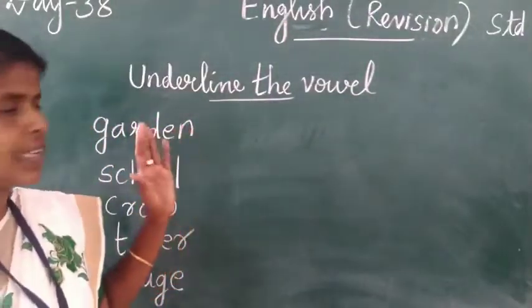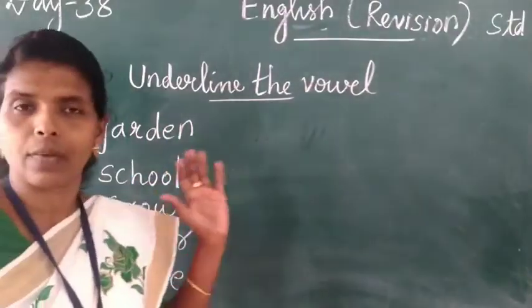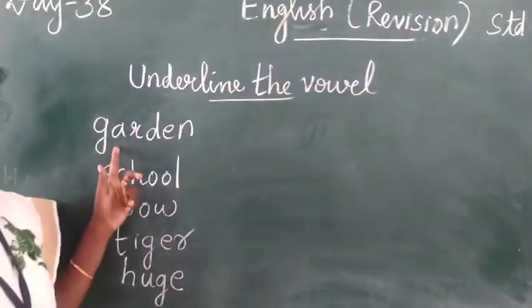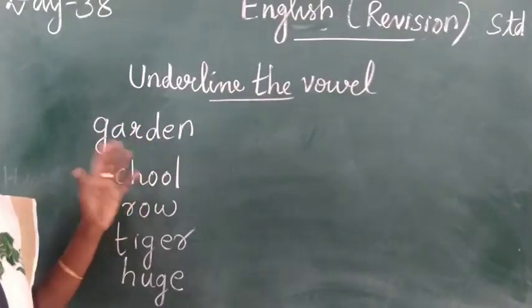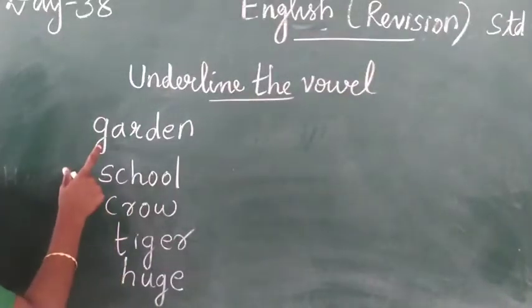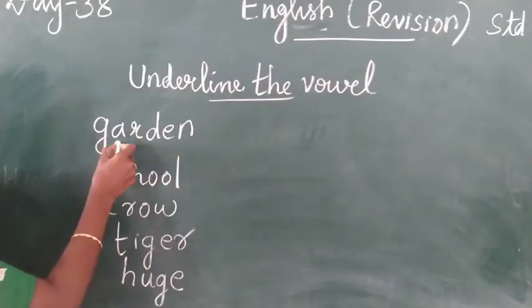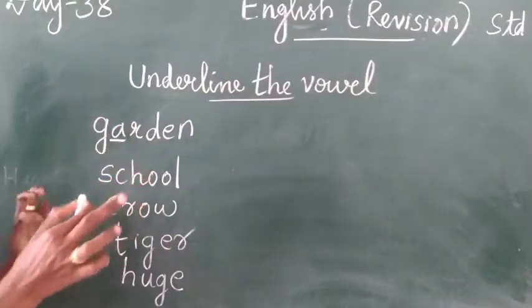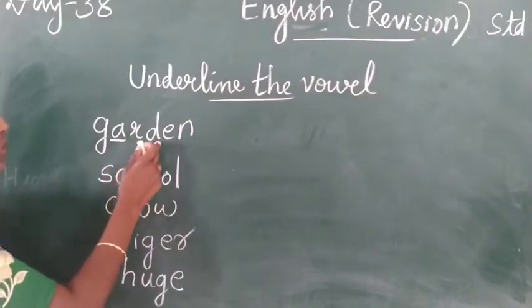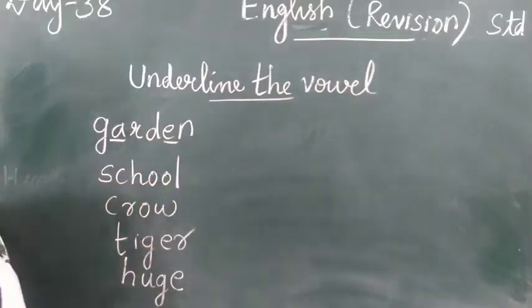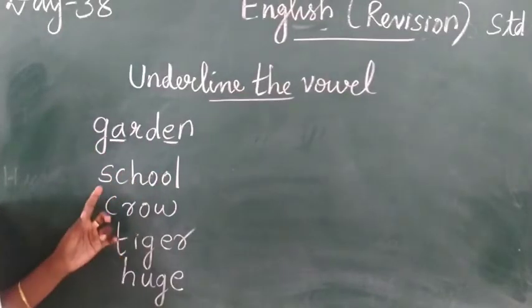What are the vowels? Underline the vowels. You know, vowels are A, E, I, O, U. For example, the word garden: G is consonant, A is vowel, R is consonant, B is consonant, E is vowel, N is consonant. A and E are vowels. Next, school.